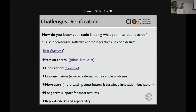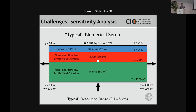Documentation is also important — you can extensively document your code in the source code manual or through example prompts. Another advantage of open source is you're more likely to get more users, which means more testing, more contributors, sustained innovation, and it increases the 'bus factor' — the number of people who could leave a project and still keep it going. It also helps reproducibility: with an open source code and published parameter files, someone should be able to reproduce your results and look at what equations you're using.